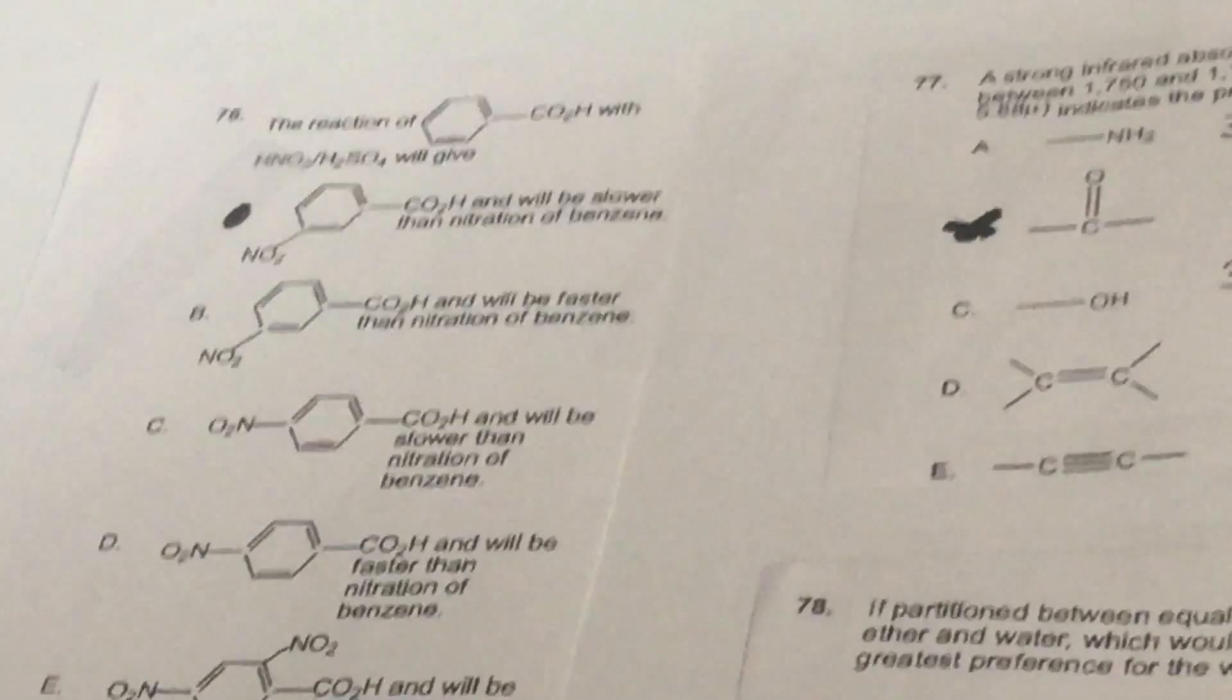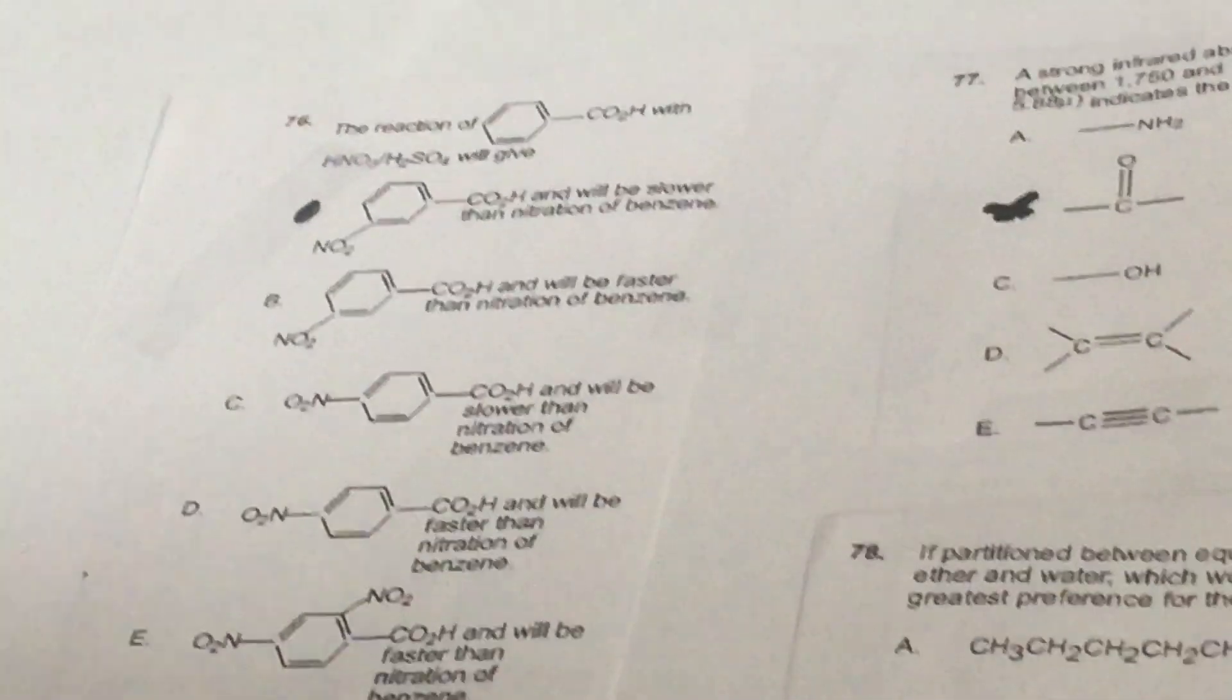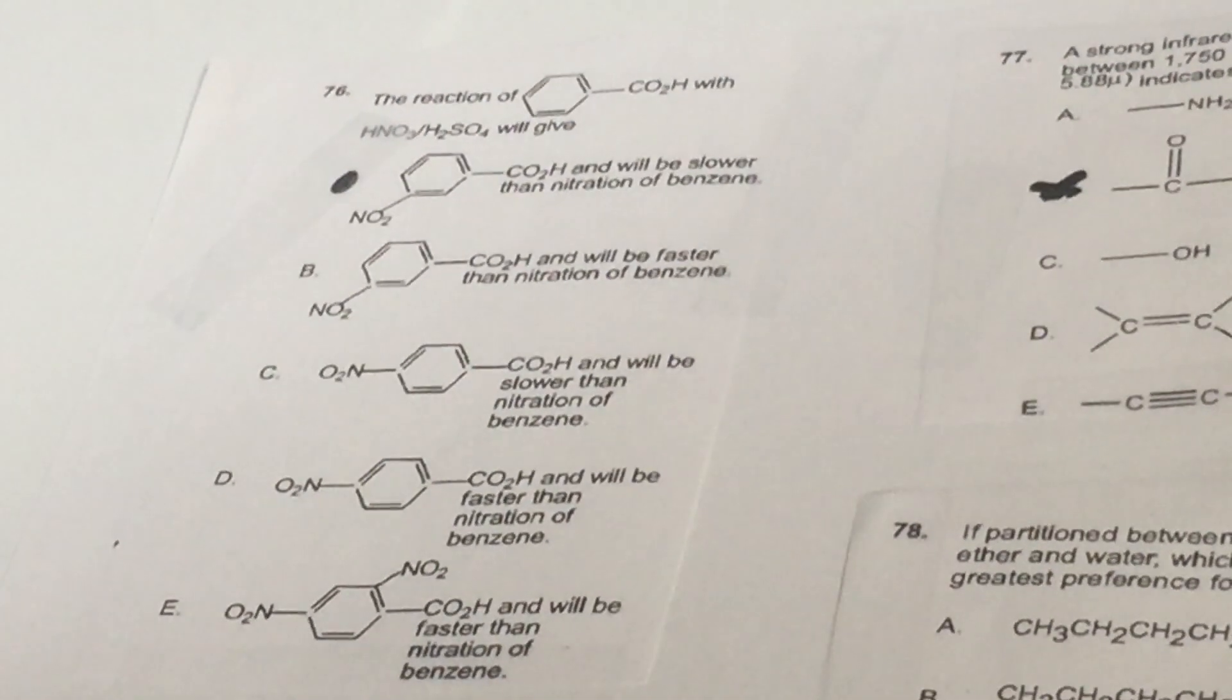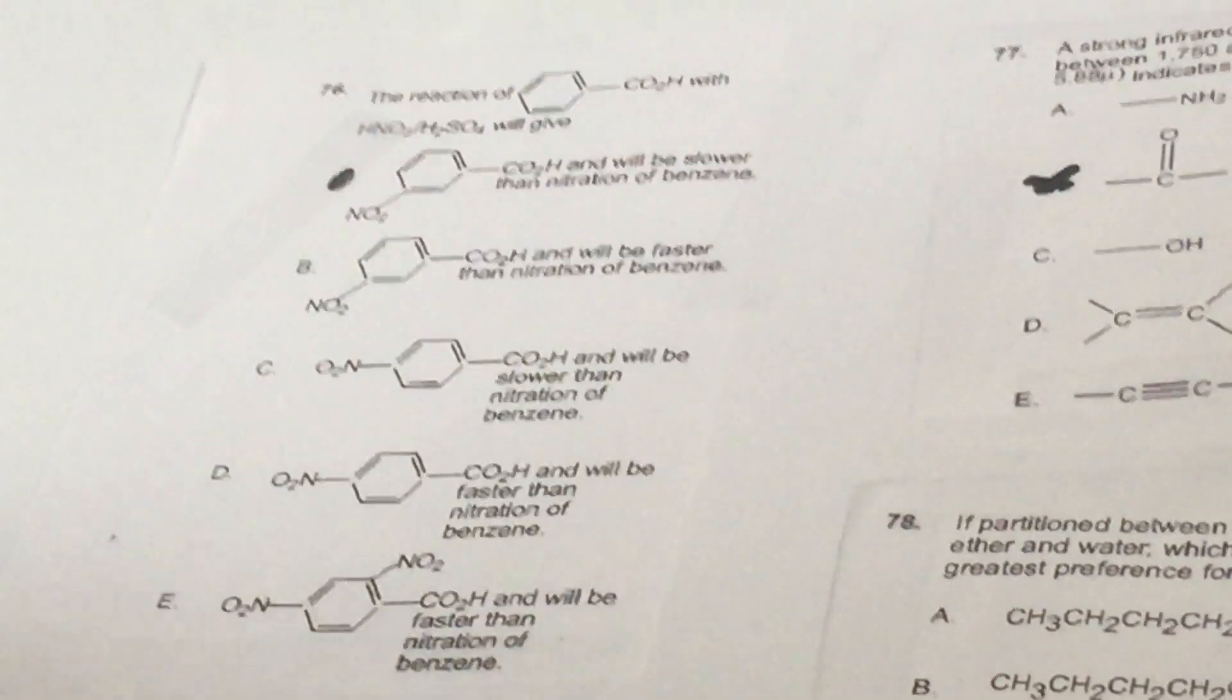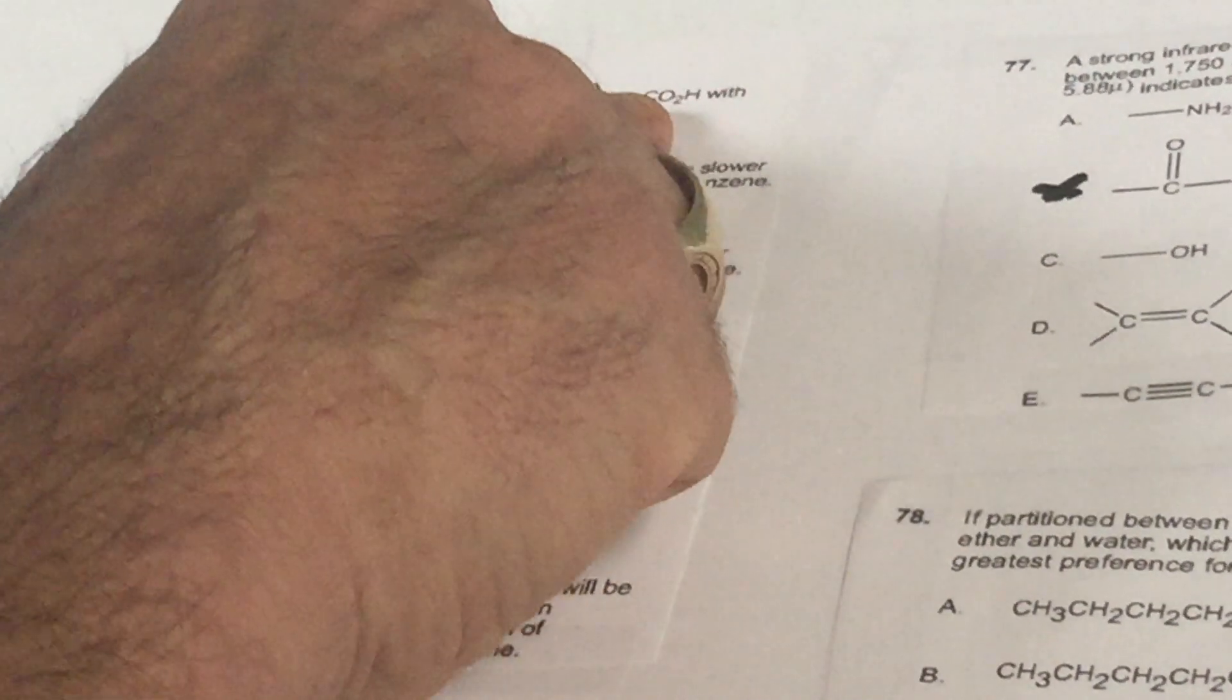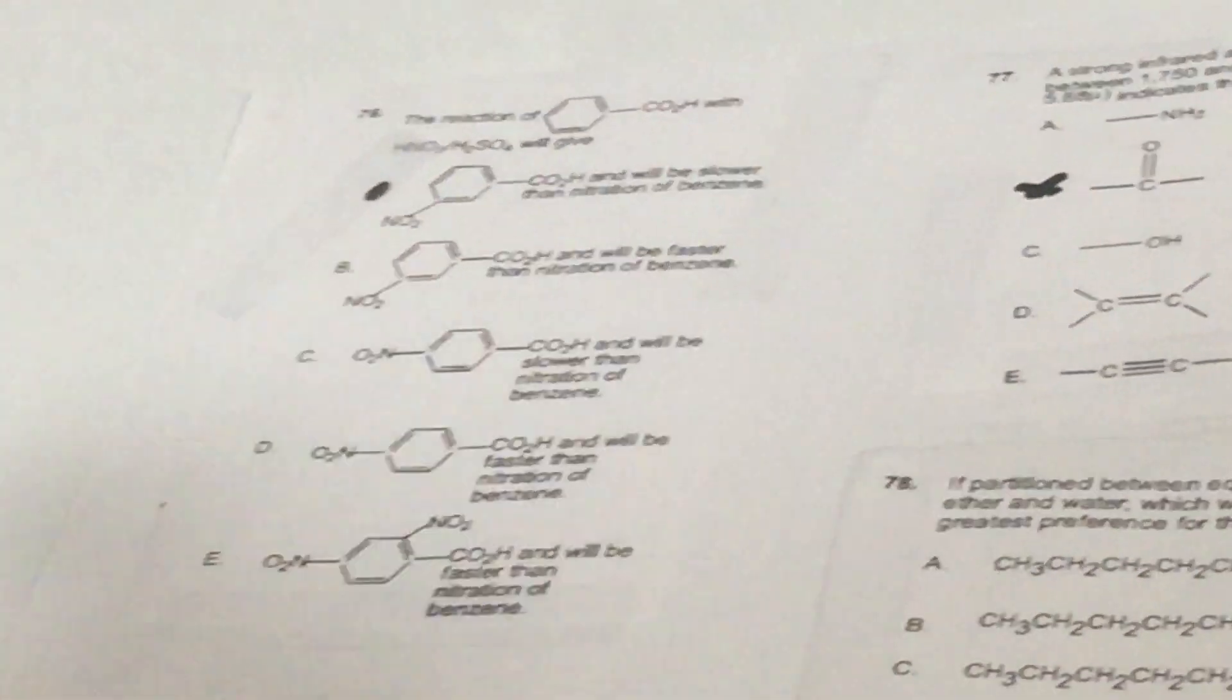76. The reaction of benzoic acid with nitric acid and sulfuric acid gives blank. First thing is the COOH group is a meta director. If it's a meta director, it's going to add something meta. Well, HNO3 and H2SO4 is going to put on a nitro group, an NO2 group to the meta position, and all meta directors slow me down. So choice A, I don't even have to go much further, is that this product is the result and would be slower than if it was the nitration of benzene. Why? Because this group is meta director. Meta slows me down. We have a lot of questions on this in the Dat Destroyer book. Much more difficult than this. But this is a nice question. I kind of like that.